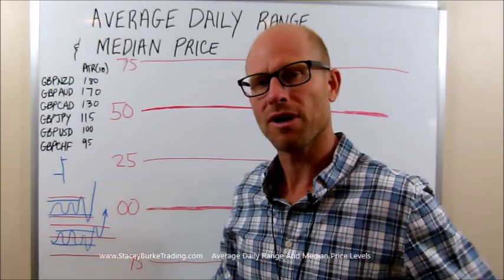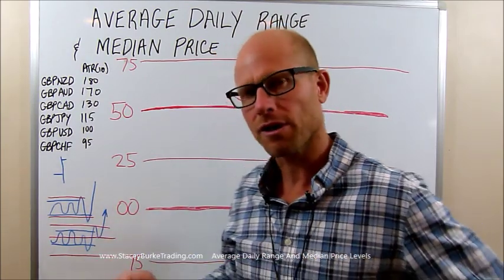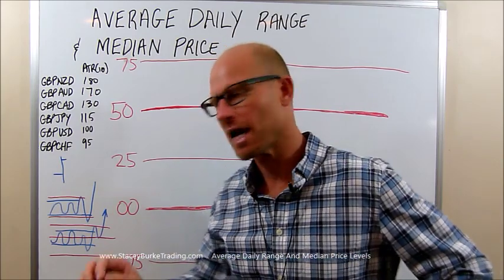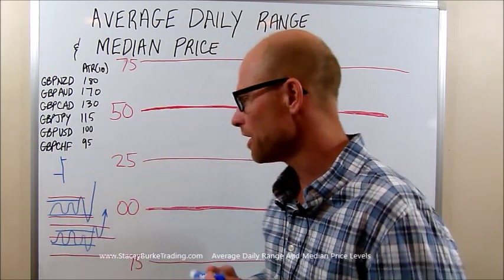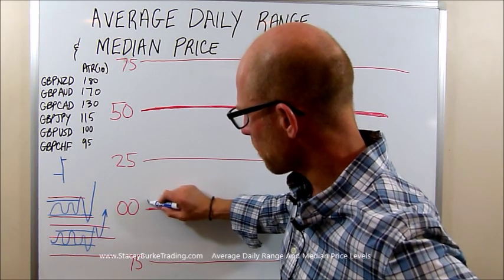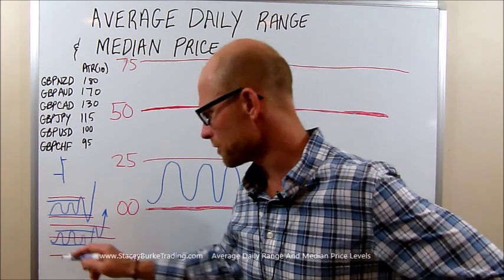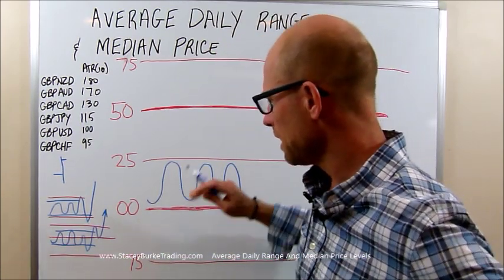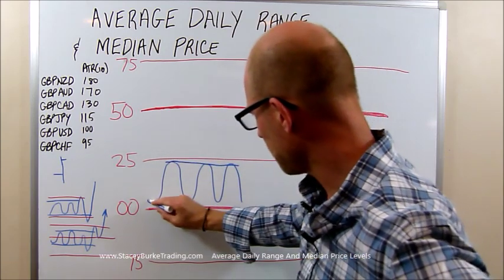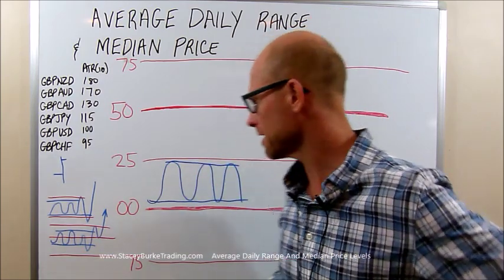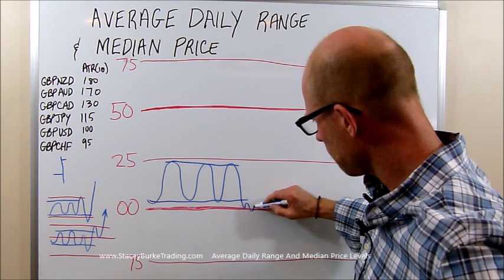No matter what the market does before we come to the screen in the London Open, they can move at 50 pips, they can move at 75 pips or they can just go sideways. Let's assume that the market in Asia is in a consolidation in a 25 pip range. In this particular case, the high is roughly in this area. And I talk about price being contained within a 25 pip box.